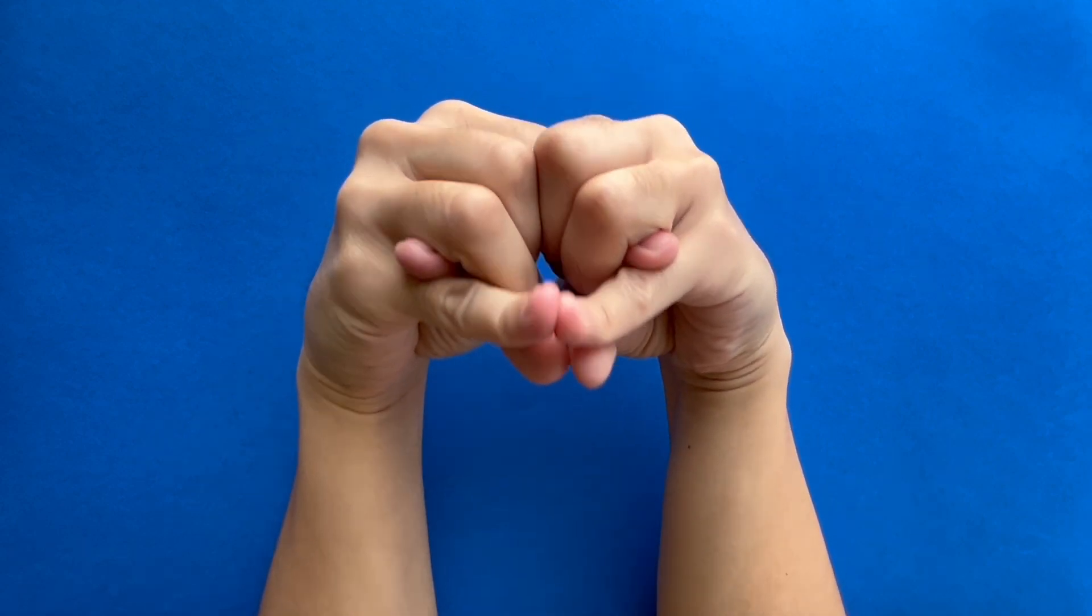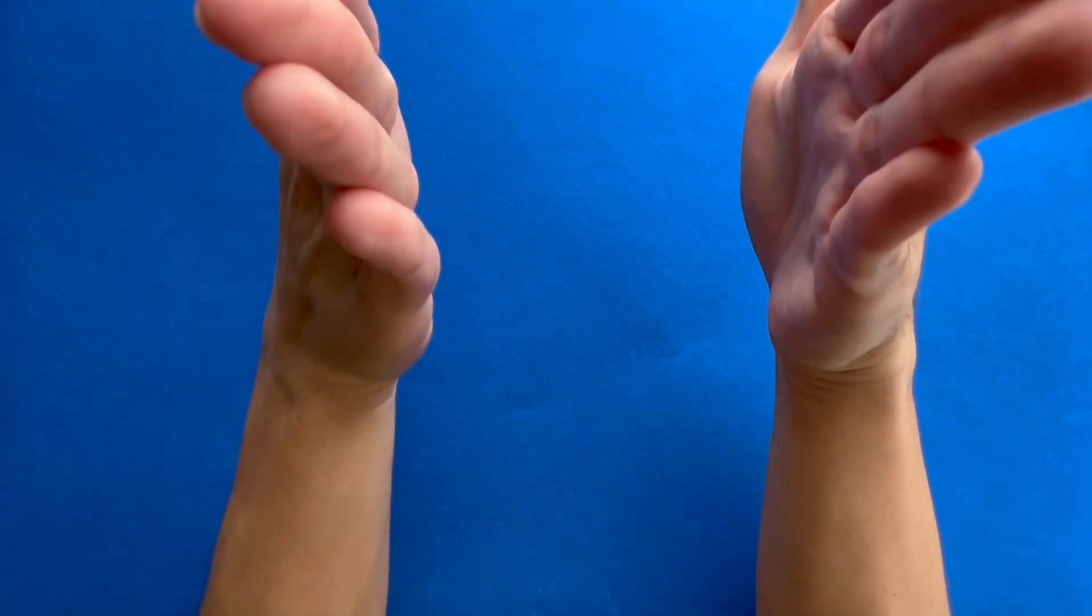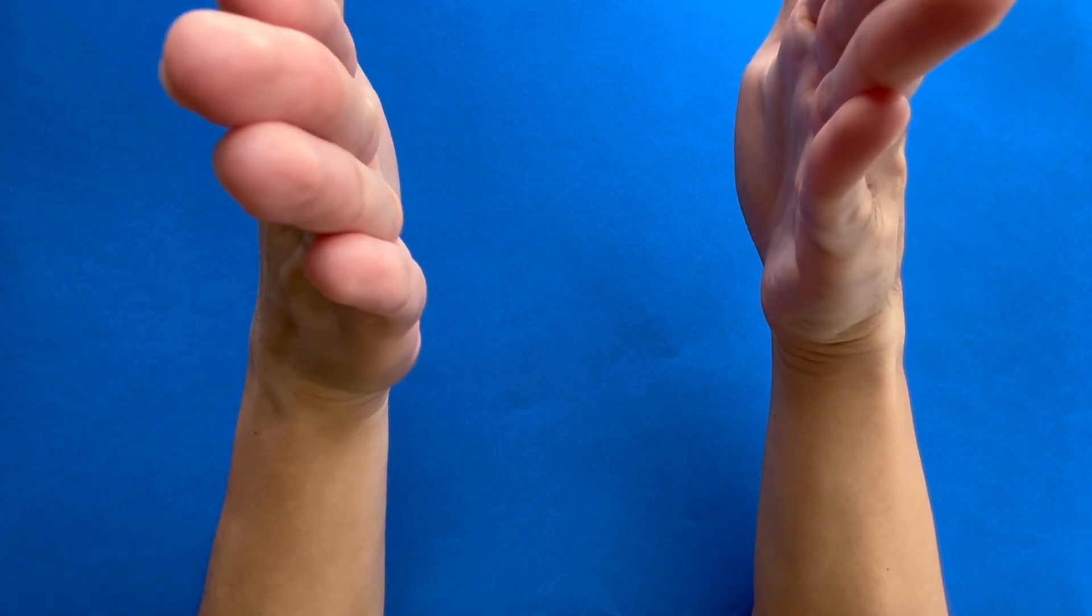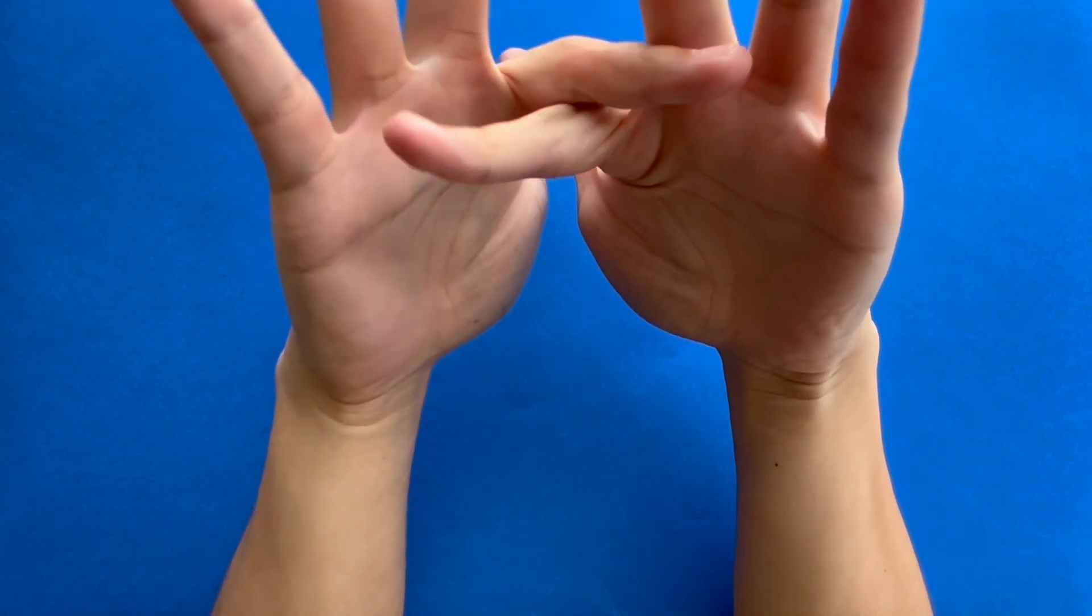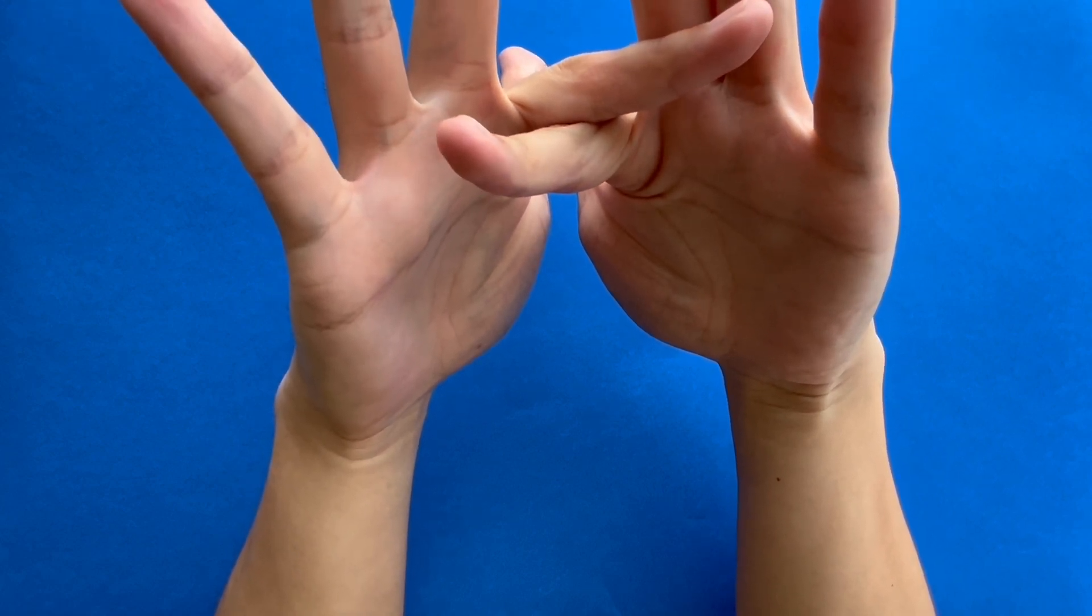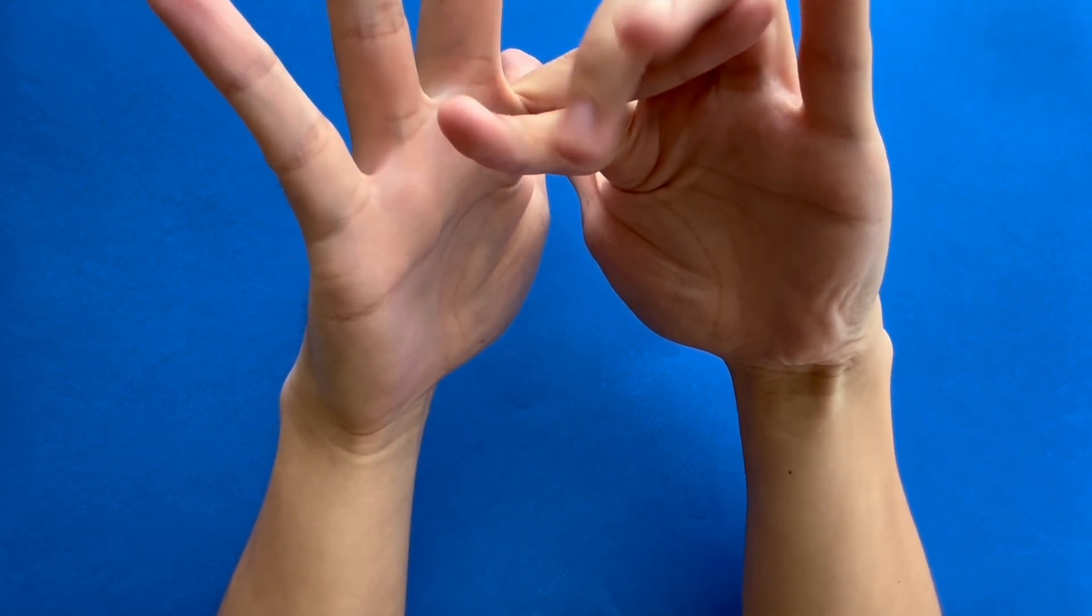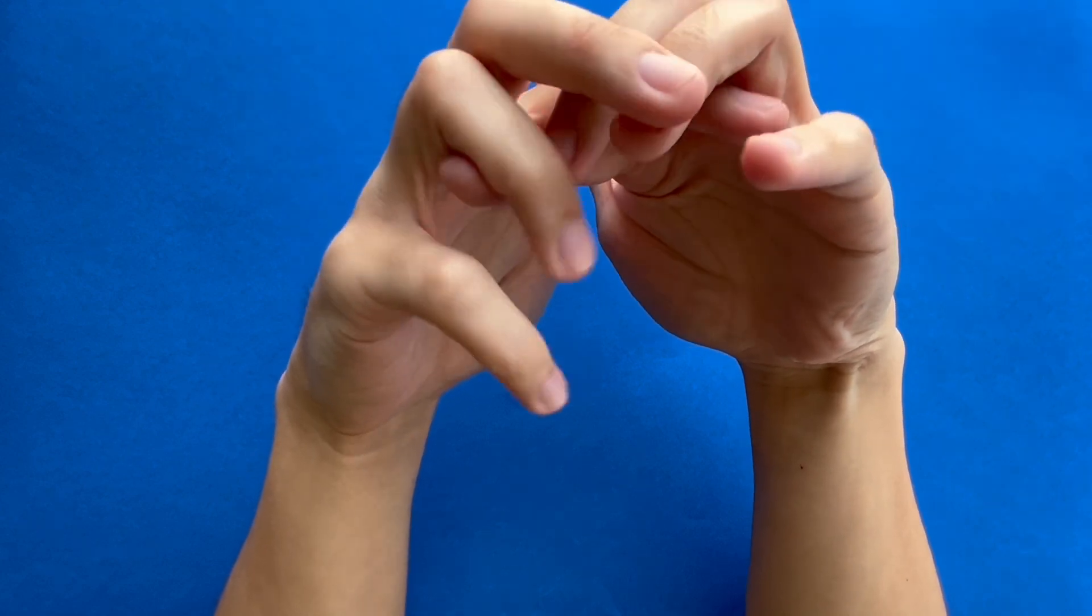So let's get started. First, have your two hands facing each other like you're about to clap your hands. Next, cross your two pointer fingers—these will be the eyes.